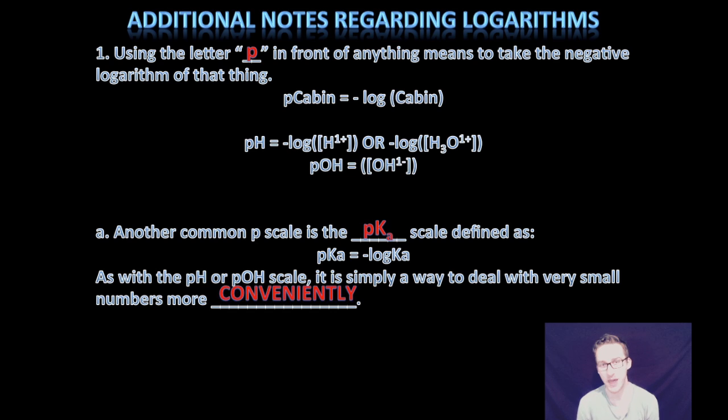We are typically going to see the letter P in front of things like H and OH and basically no pun intended. What that means is that we want to take the negative log of the hydrogen or hydronium ion concentrations. If we're talking pH or if we're talking pOH, we're talking the negative log of the hydroxide ion concentration. Another common P scale that you're going to see here in chemistry is the pKa. And again, it's just talking about taking the negative log of those Ka values that we came up with when we're talking about strong or weak acids.